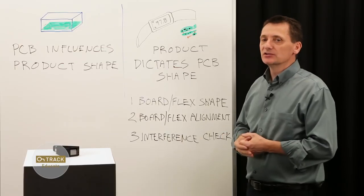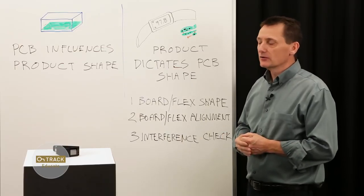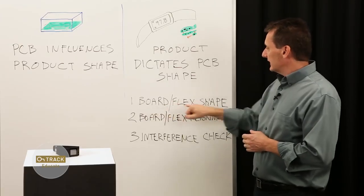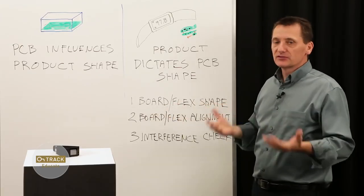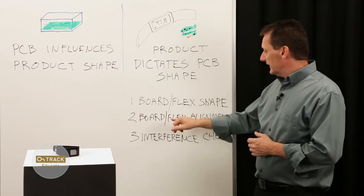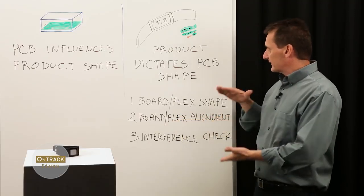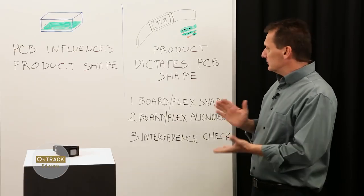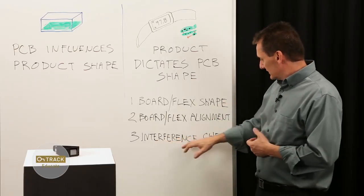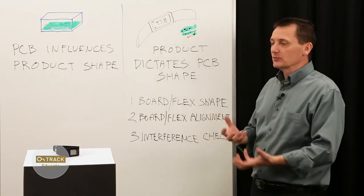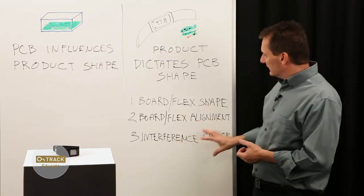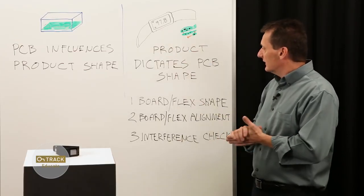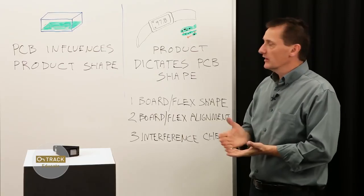This creates some challenges for the PCB designer. So one of the main challenges would be how to get the accurate board and flex shape to start out with, and then how to get the board and flex alignment so that when you start putting components on the boards. How do you do the third issue, which is interference checking? How do you accurately take all of these mechanical constraints due to this small form factor and solve that problem of doing the board layout?